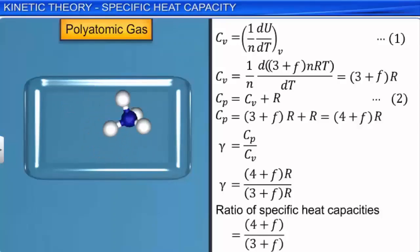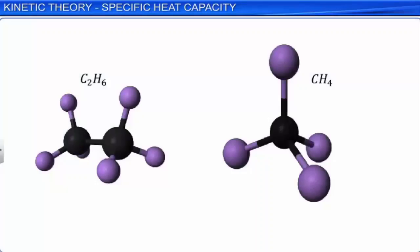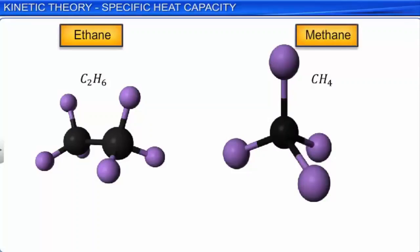At ordinary temperatures, the predicted values of Cp and Cv are in good agreement with the actual values. But at higher temperatures, there are some polyatomic gases such as ethane and methane for which the predicted values are not the same as the actual values. In such cases, we should include the degrees of freedom in the vibration mode.